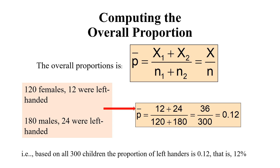To compute the overall proportion, we divide the total number of left-handed children by the sample size. We knew that 12 out of 120 females and 24 out of 180 males were left-handed, so we add 12 plus 24 and divide by the overall sample size of 300, which gives 0.12. The proportion of left-handers across all 300 children is 0.12, or 12 percent.